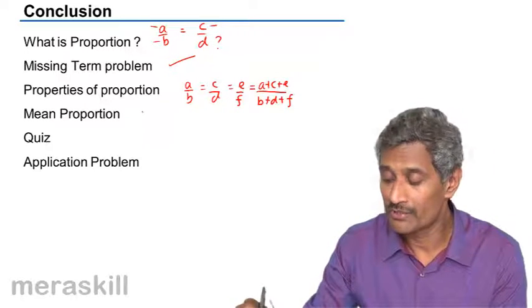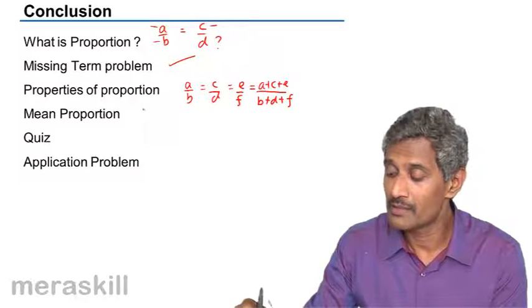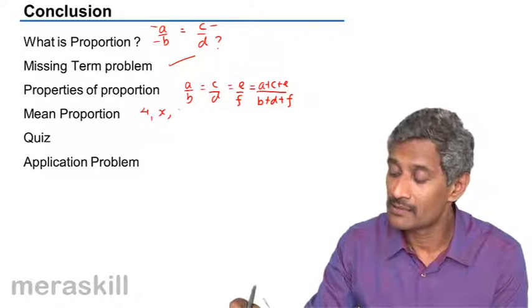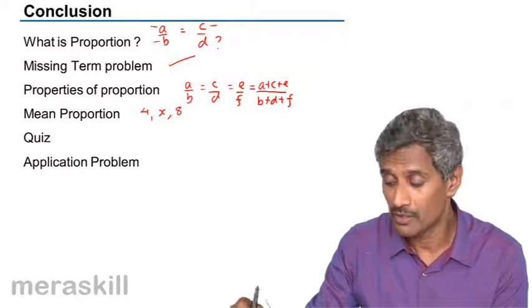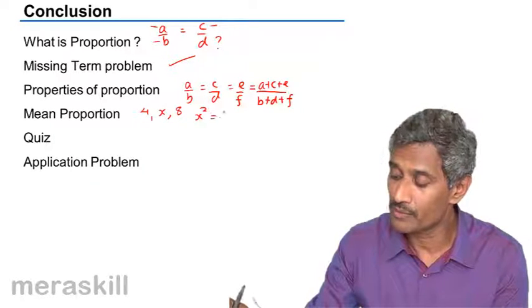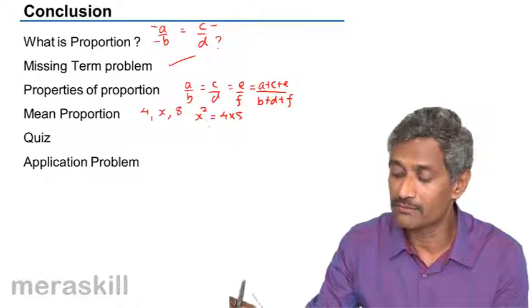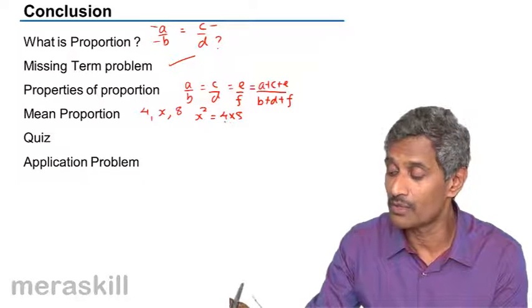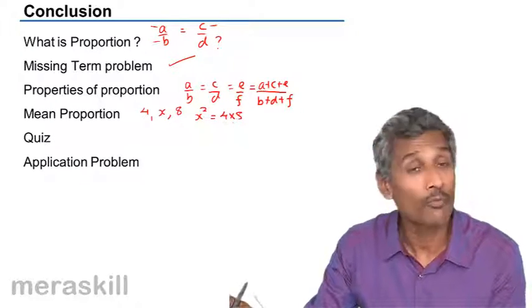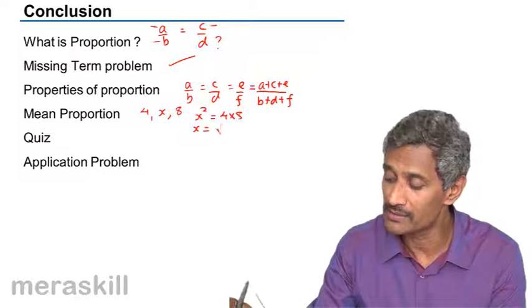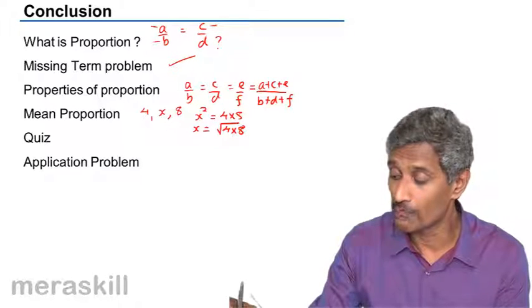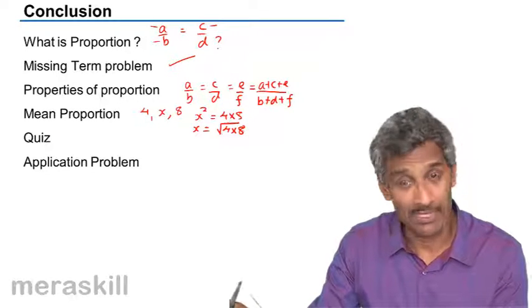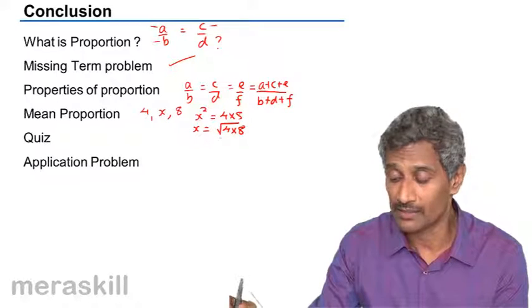Mean proportion we did that if three numbers say 4, x and say 8 were in continued proportion which means that x square will be equal to 4 into 8. So, in that case x is called the mean proportional of 4 and 8. In other words x is the square root of 4 and 8. So, the mean proportion of 4 and 8 is obtained by multiplying them and then taking the square root.